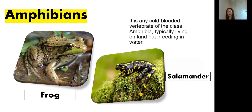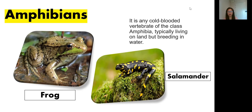Next: amphibians — please say the word: amphibians. Very good. An amphibian is any cold-blooded vertebrate of the class Amphibia, typically living on land but breeding in water. Again, amphibians live on land but they breed in water.